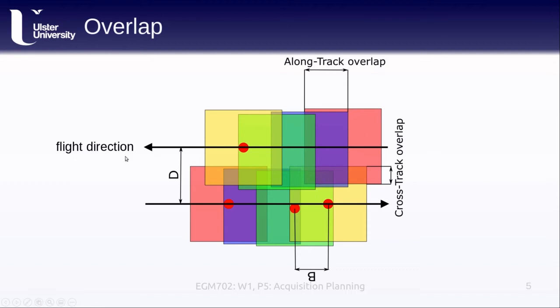If we have multiple passes, if we're looking at a target like this and we go across it this way and we come back across this way, the amount of overlap that we have between our different images across the direction of flight is what's known as the cross-track overlap.